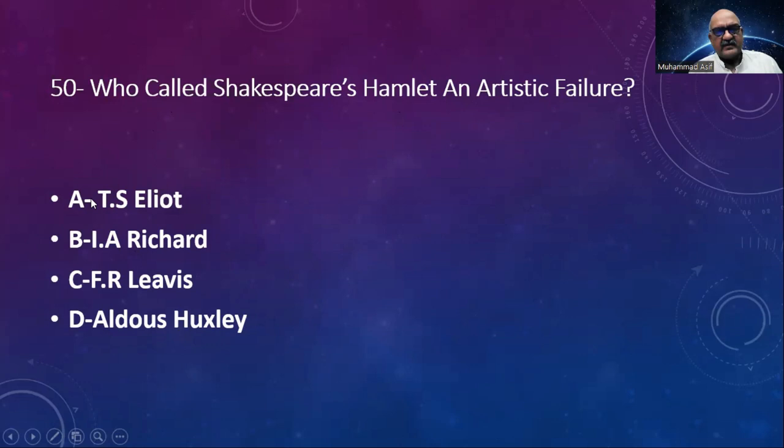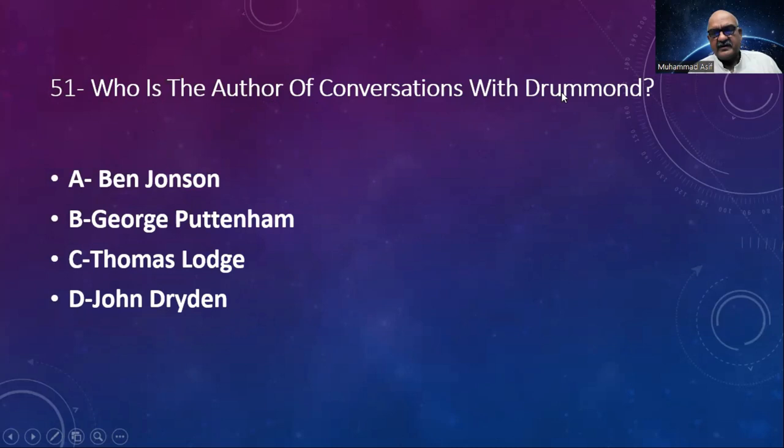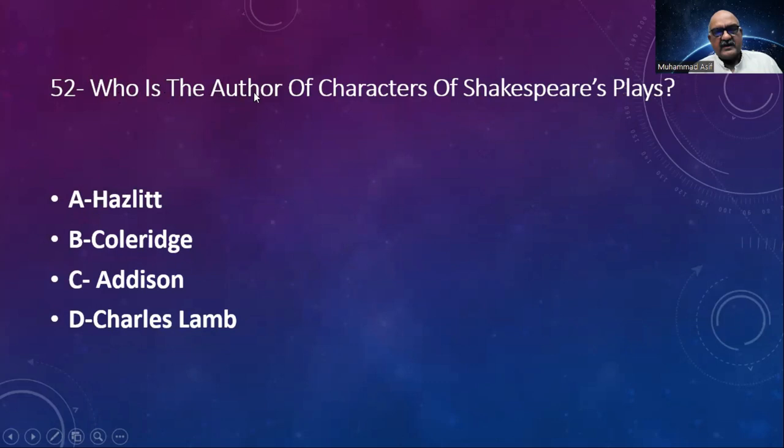Number 51: Who is the author of Conversations with Drummond? Options: Ben Jonson, George Puttenham, Thomas Lodge, John Brighton. The answer is Ben Jonson. Number 52: Who is the author of Characters of Shakespeare's Plays? Options: Hazlitt, Coleridge, Addison, Charles Lamb. The answer is Hazlitt.